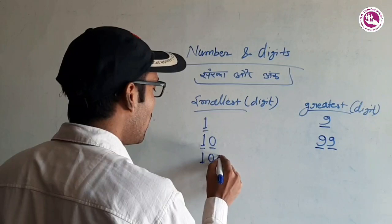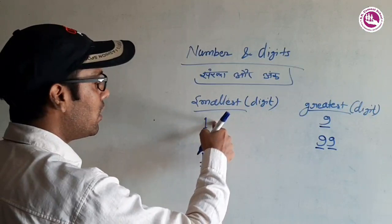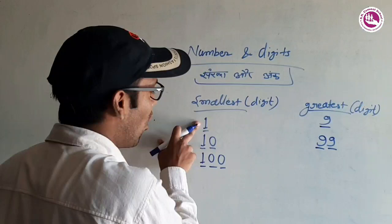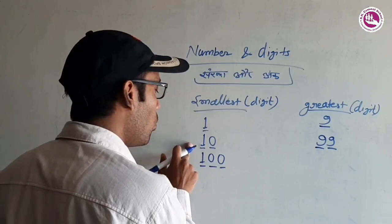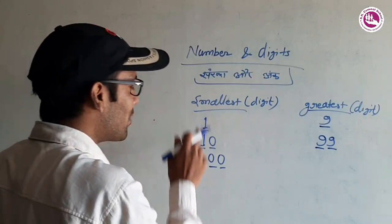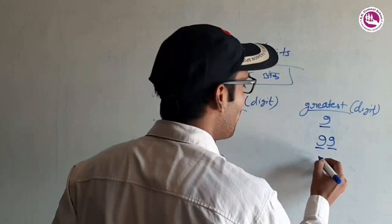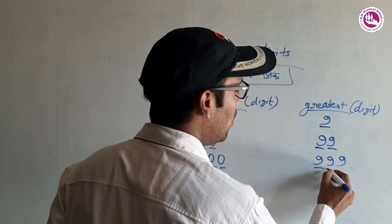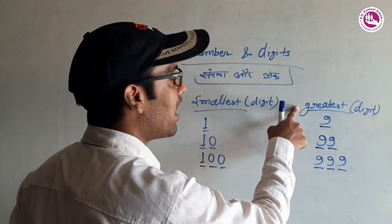Agar pucha jaye ki three-digit ka smallest number kya hota hai, to dikhega: one, double zero — one hundred. Yeh three digit hai. Ek digit, do digit, teen digit. So, three-digit ka smallest number is one hundred, aur three-digit ka greatest number kya hoga? Nine hundred ninety-nine — 999. Ismein three digits hain: one, two, three. Yeh ho gaya greatest number.